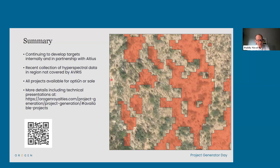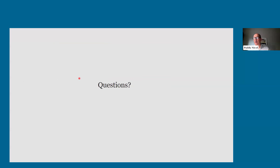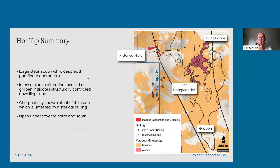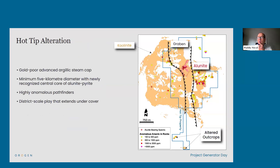We look forward to your questions now. For those who attended late, this event is being recorded and there's a Q&A feature at the bottom of the Zoom toolbar. The PDF with speaker notes will be available on our website under the Prospect Generator tab. The first question is regarding Hot Tip: can you rule out that the hydrothermal system is truncated by a low-angle normal fault at depth?